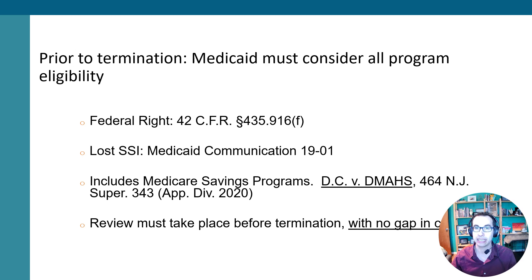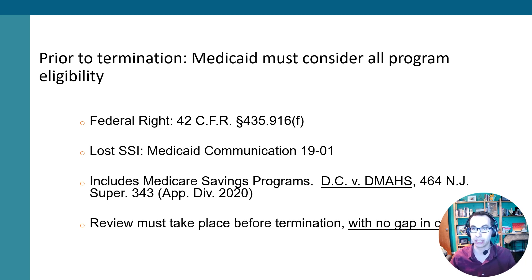Before anybody loses Medicaid eligibility, if you're somebody already on Medicaid, the state has to review every year whether you're still eligible. If they want to terminate you, they have to check if you're not eligible under your current door, whether you're potentially eligible under a different door. In fact, they have to check every door first before terminating any person from Medicaid. There are protections in federal law, sub-regulatory documentation at the state level, and case law from New Jersey's appellate division requiring the state to review every eligibility door before terminating anyone's eligibility. This review is supposed to happen before termination takes place.